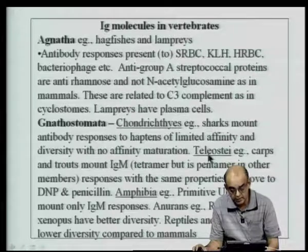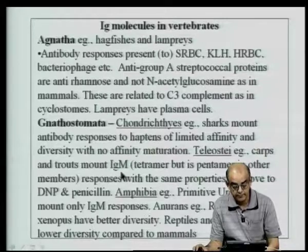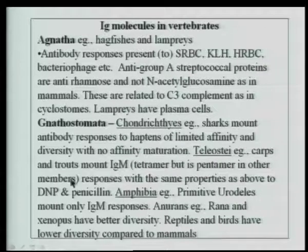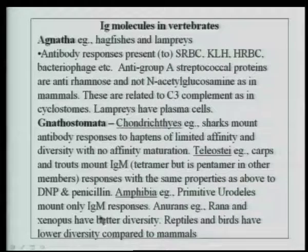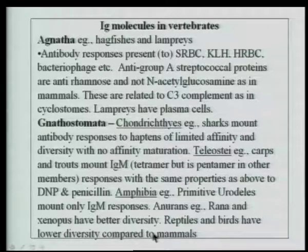In bony fishes like carps and trouts, they mount an IgM response — a tetramer in carps but a pentamer in many other teleosts — and they respond to various kinds of haptens like penicillin and dinitrophenyl hapten. When you come to amphibia, primitive urodeles mount only IgM responses, lacking the other kinds of immunoglobulin molecules, but anurans like rana and xenopus — frogs — have better diversity.